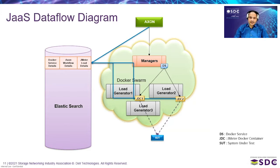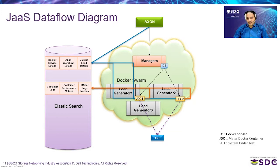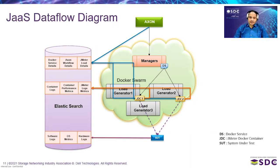When Docker service brings up JMeter Docker containers, those containers read job information from the database and start stressing the system under test. Data generated in the JMeter containers — container logs, performance metrics, and JMeter metrics — are all collected live and stored in the database. Software logs, OS metrics, and hardware logs from the system under test are also collected and stored in Elasticsearch.